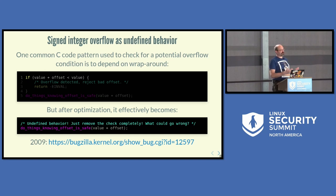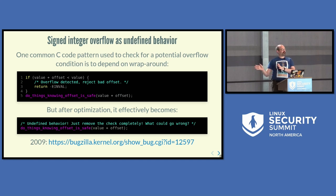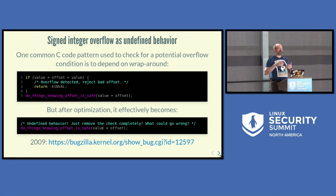There's a relatively common C code pattern for checking for potential overflow by looking for wraparound: if some value plus an offset is less than the value was, we've clearly wrapped around, so we reject it. If we don't wrap, we proceed knowing the offset is safe. But after optimization, this effectively just gets thrown away — the compiler sees it as an impossible state or undefined and removes it completely. This first hit the kernel in 2009.